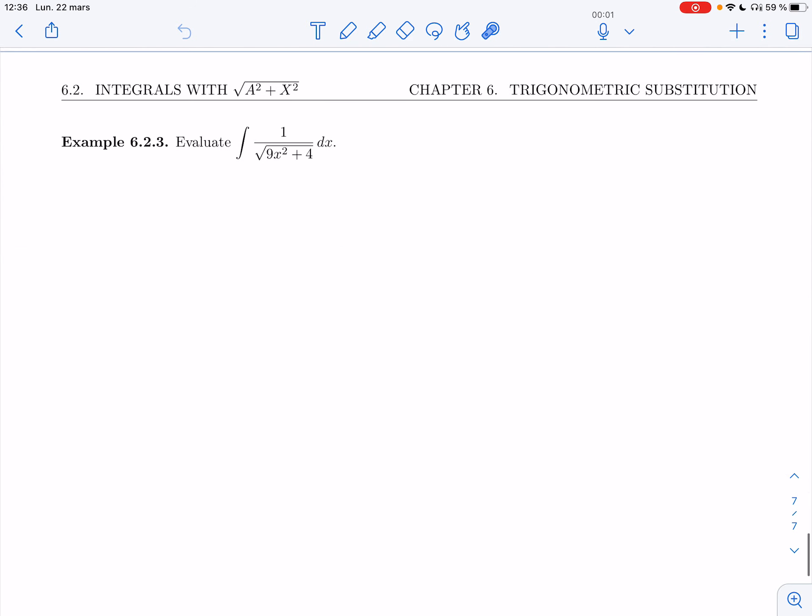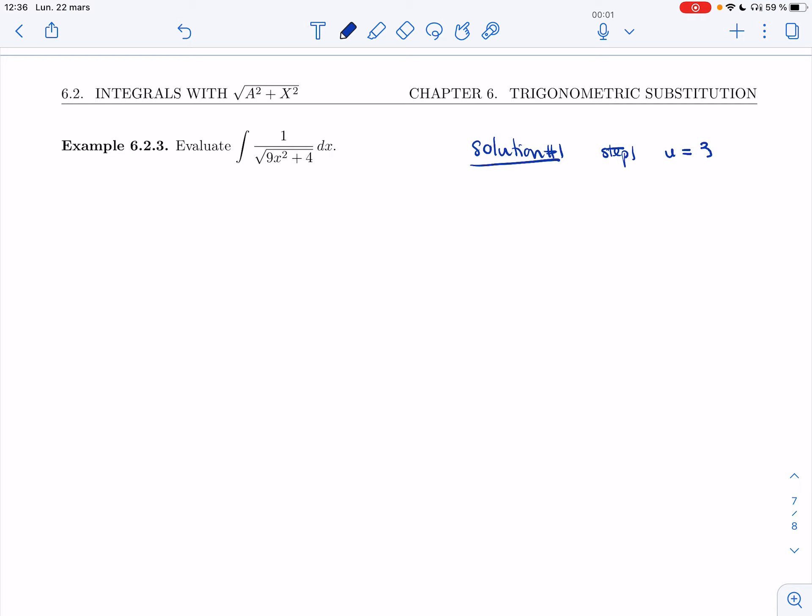Note that you could also, let me put that right here just for those of you who'd like to try it, you could actually do this by first subbing u equals 3x. So you think of 9x squared plus 4 as 3x squared plus 4. And then you change it to u squared plus 4. So you first do this substitution and then step 2, our method here. So you would have u equal 2 tan theta.